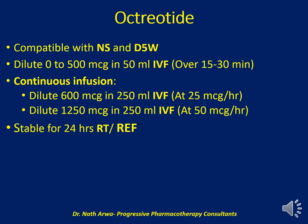Octreotide is compatible with both 5% dextrose and normal saline. Doses of up to 500 mcg should be diluted in 50 ml of IV fluid of choice, and after homogenizing, infuse over 15 to 30 minutes. For continuous infusion: 600 mcg diluted in 250 ml administered at a rate of 25 mcg per hour; or 1250 mcg diluted in 250 ml and infused at a rate of 50 mcg per hour. Such solutions are stable for 24 hours both under refrigeration and at room temperature.